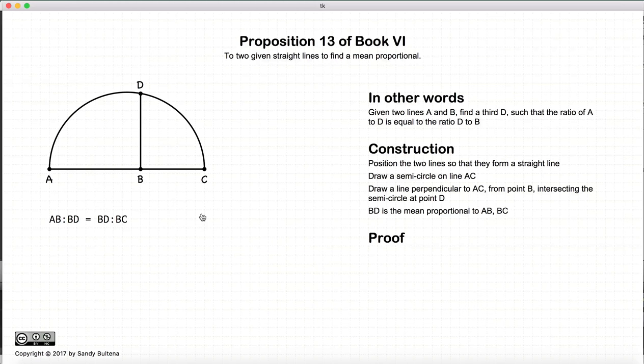So what's our proof? First, let's join the lines AD and DC. The angle ADC is a right angle. Whenever you have a semicircle and you have two lines drawn in the semicircle like this, it is always a right angle. And that was shown in Book 3, Proposition 31.